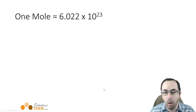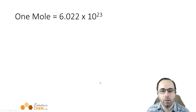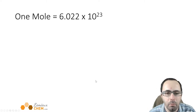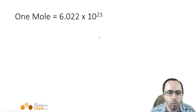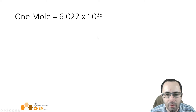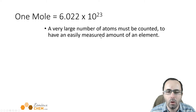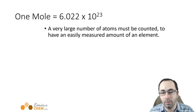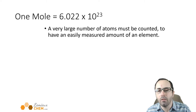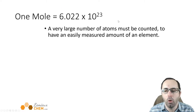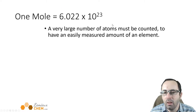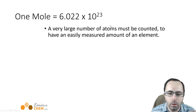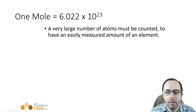A mole just means a certain number of things — they could be atoms, it could be anything — but usually we refer to very small things because a mole is a very big number. A mole of anything is 6.022 times 10 to the 23 of those things. We use this number to count very small things because a handful of stuff is going to have about this many atoms.